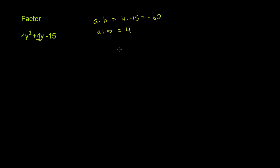So we could try out things like 5 and 12. 5 and negative 12, because one has to be negative. If you add these two, you get negative 7. If you did negative 5 and 12, you'd get positive 7. They're still too far apart.